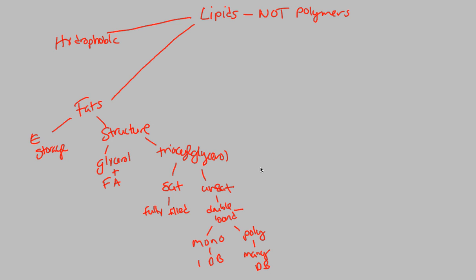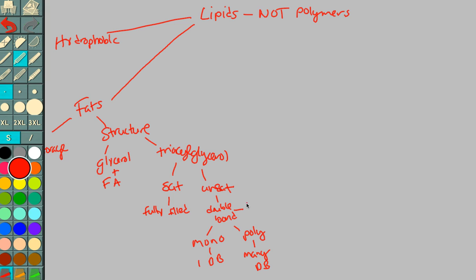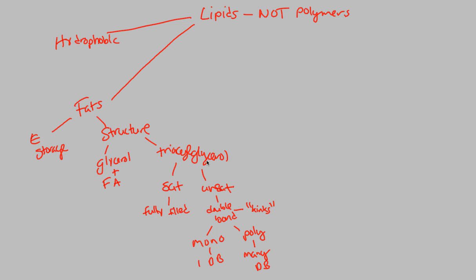Unsaturated fats are the ones that have double bonds. These double bonds actually have kinks. These kinks are what give the unsaturated fats their liquid ability — they don't stack as well as saturated fats. Unsaturated fats have a liquid form at room temperature, like oils. These double bonds cause kinks, and these kinks create a structure in which liquid is actually preferred over solid.